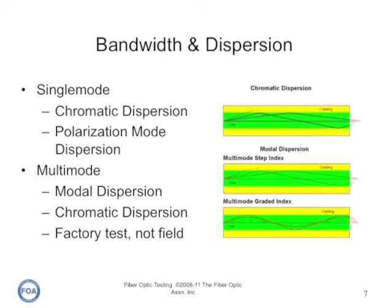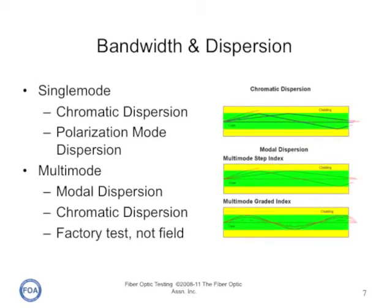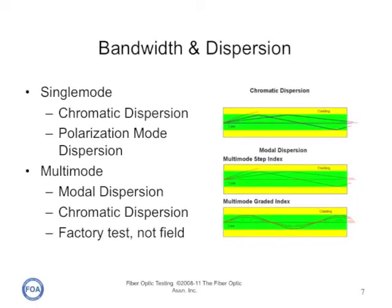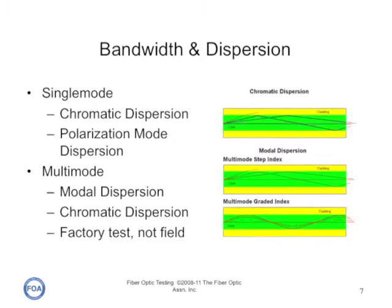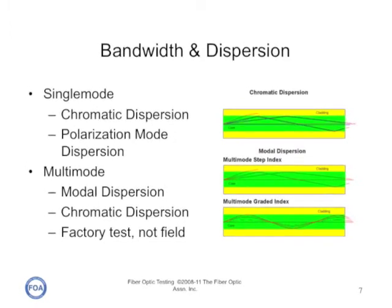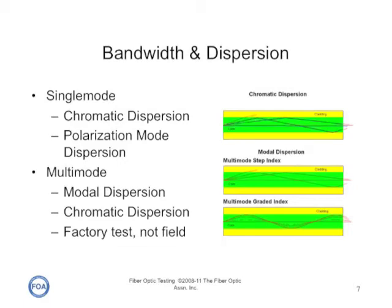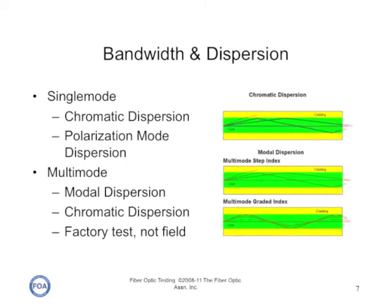Bandwidth and dispersion are different for single mode and multi-mode fiber. For single mode fiber, we're interested in chromatic dispersion and polarization mode dispersion, particularly on long links after they're installed in the field. For multi-mode fiber, we're interested in modal dispersion and chromatic dispersion, but we only test it in the factory, not in the field.